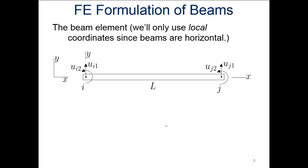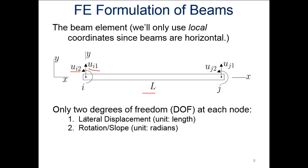Looking at node i and node j at either end of the element, we have two displacements we're concerned about: the lateral displacement and the angle or rotation displacement — only two degrees of freedom. Lateral displacement has units of length, and the rotation or slope at each node is in radians. So we have two different units in this formulation, which we'll discuss later. For beams, it's just lateral displacement and rotation — no axial displacement.